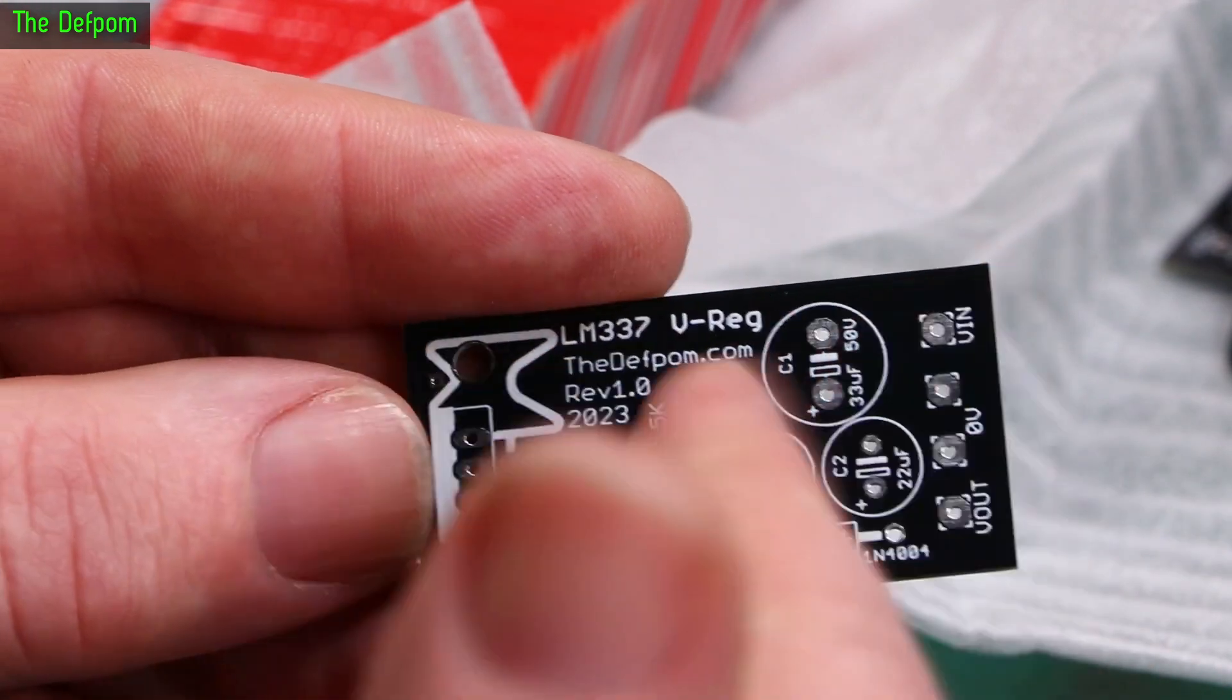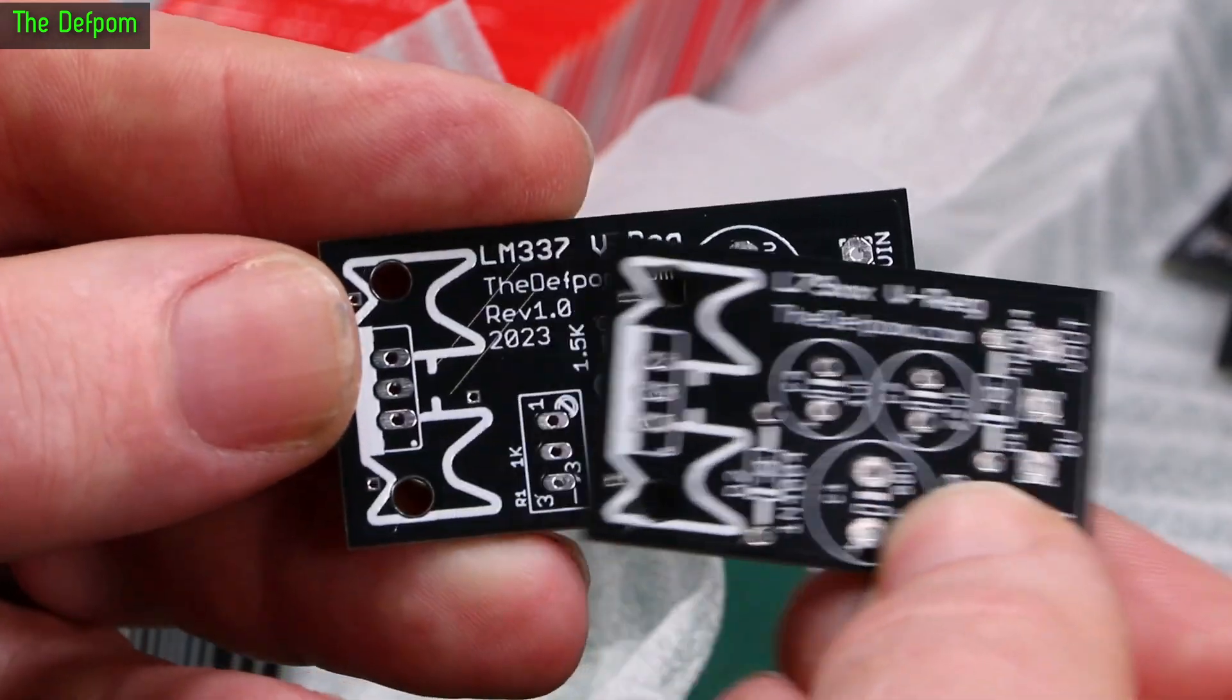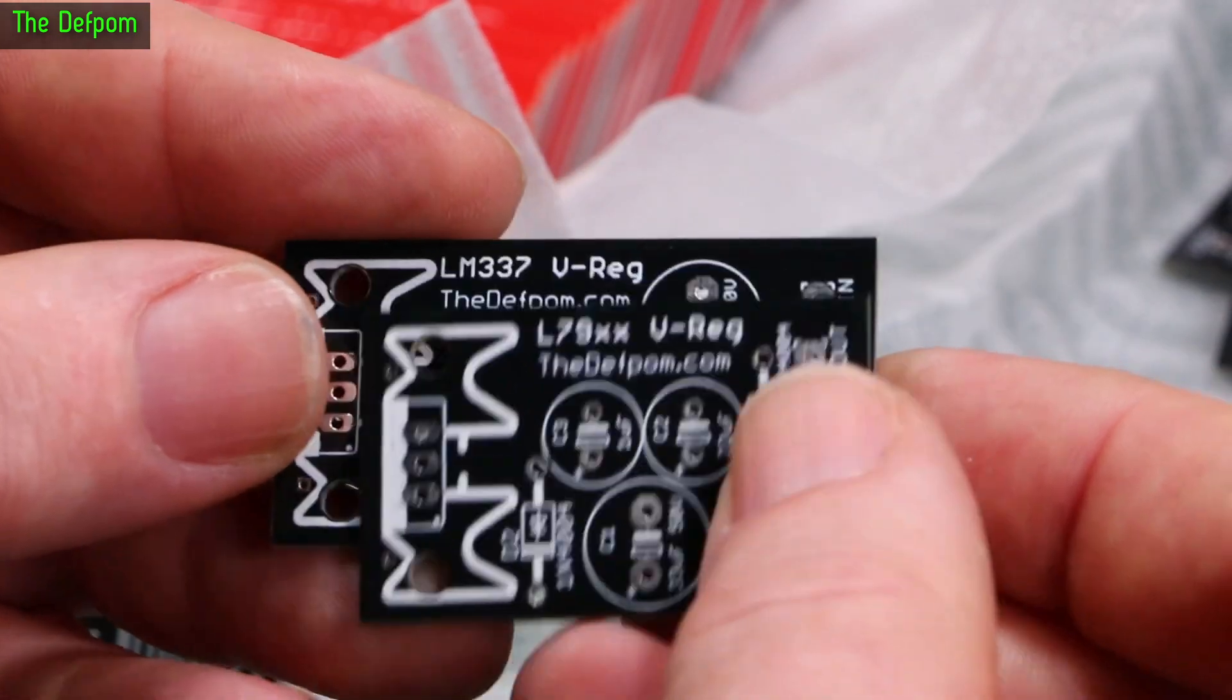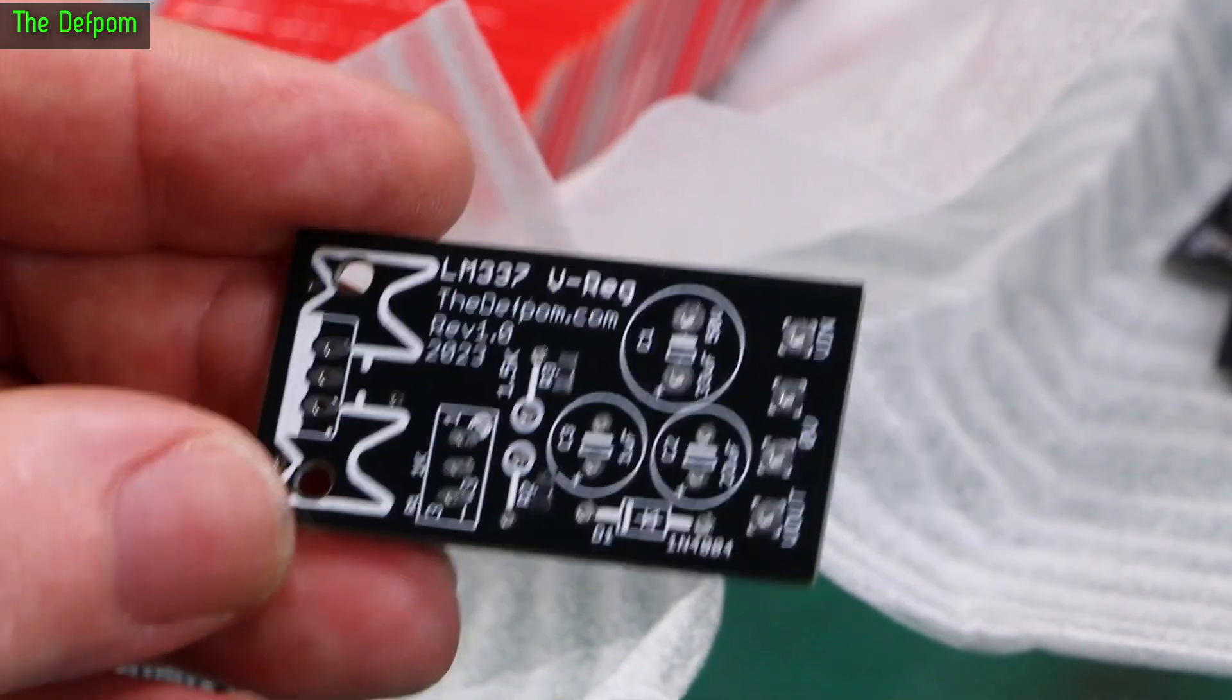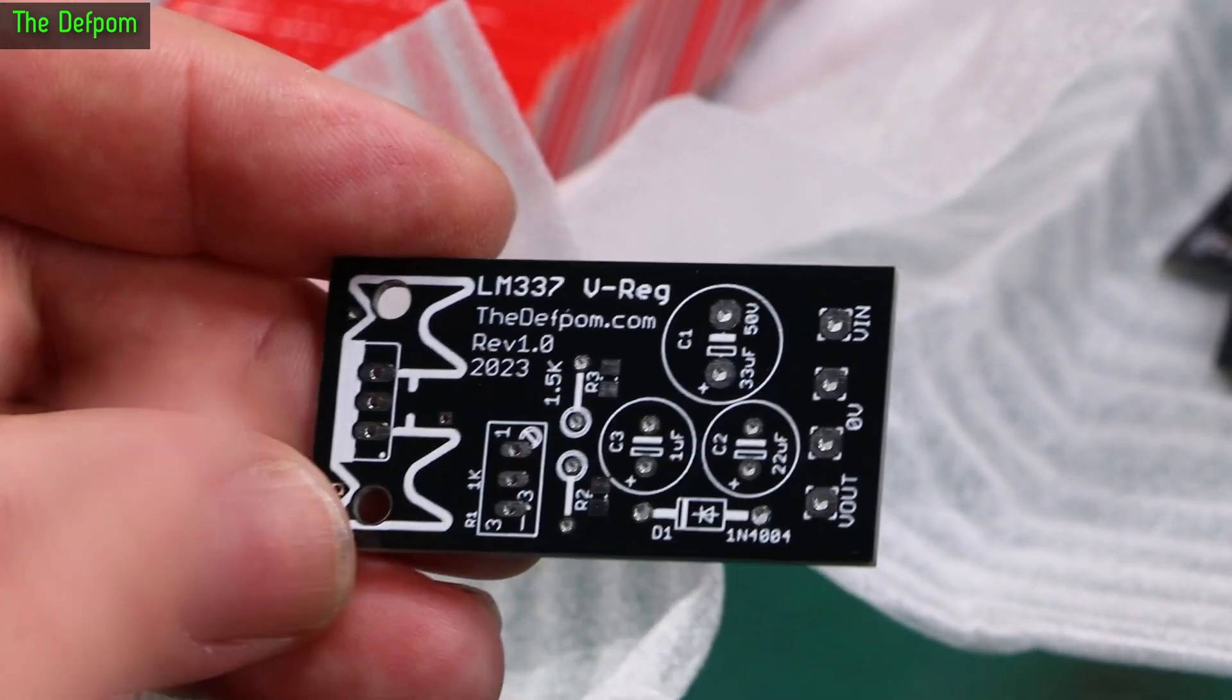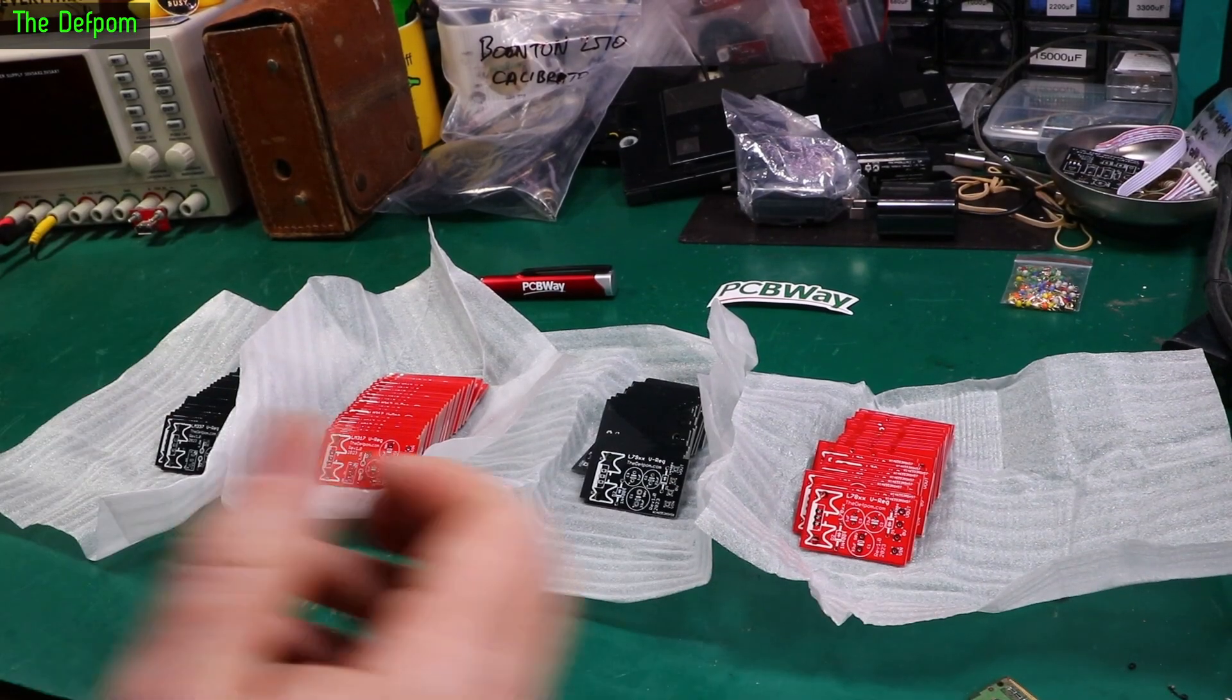But sometimes you don't need that whole complexity of adjustable board. Plus the 79 series is very slightly smaller. Because obviously you don't need the adjustments. So if you need something a bit more compact you could use this. Of course you could always do a surface mount version and make it even more compact. But that's not necessarily what you want. Sometimes you want something like this. The gear I work on, there's usually plenty of space inside it. And I'm trying to do something simple and robust.